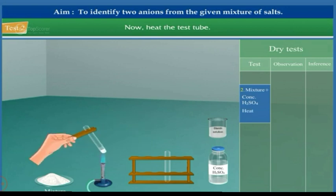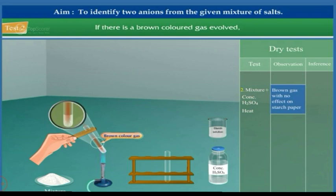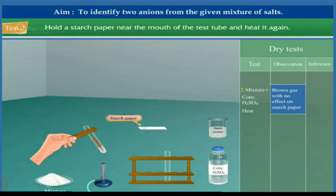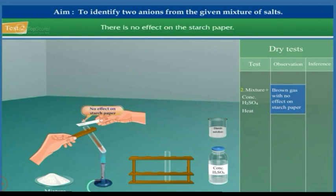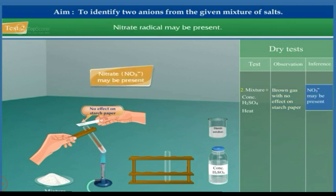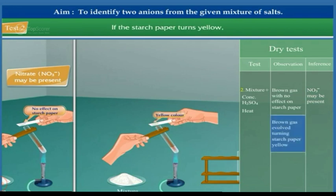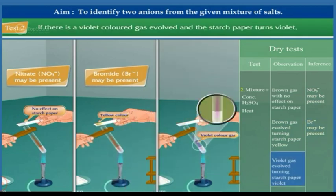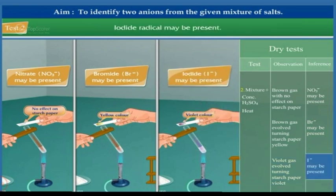Now heat the test tube. If there is a brown colored gas evolved, hold the starch paper near the mouth of the test tube and heat it again. If there is no effect on the starch paper, nitrate radical may be present. If the starch paper turns yellow, bromide radical may be present. If there is a violet colored gas evolved and the starch paper turns violet, iodide radical may be present.